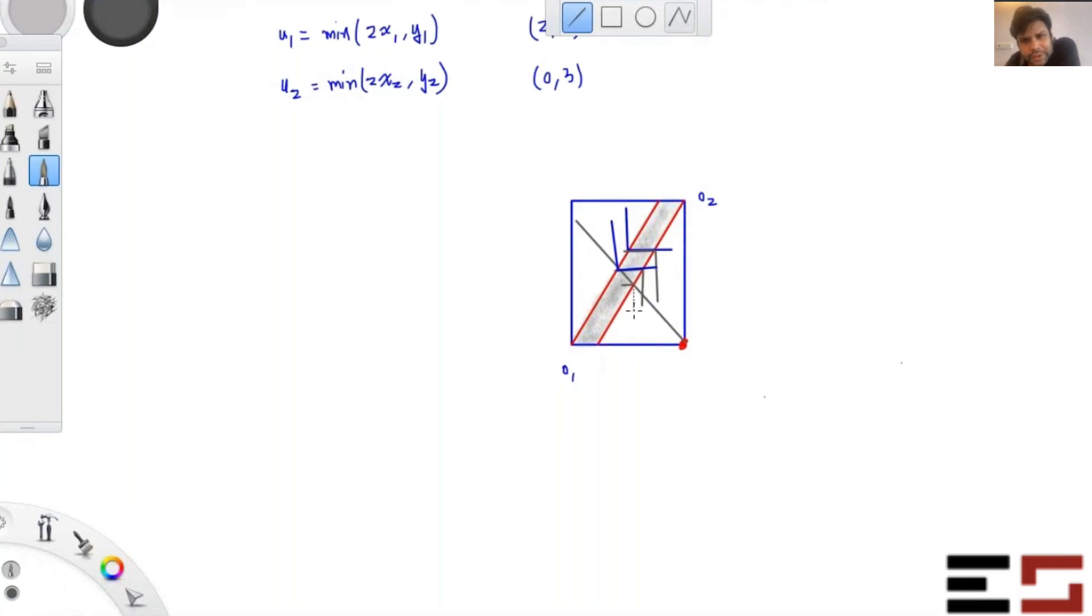Obviously there is an excess demand for y. There is an excess demand for y and there is an excess supply of x, so clearly that's not market clearing. Have you all understood this? Can you see why there is excess demand for y? Because individual one demands this much amount of y and individual two demands this much amount of y. So if you sum them, it is bigger than the total height of the box.